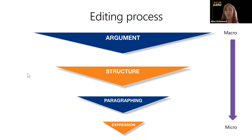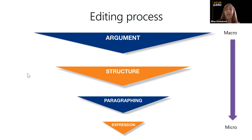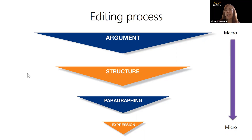It's always about how the micro leads back up to the macro. How does paragraphing and expression best support your structure, which supports your overall argument? You always think about that relationship, but you must start with the macro first. The expression part — even though it's last and in many ways least important in terms of mark weight — actually has the most you can do with it. There's a lot to think about at that stage, but only once your argument, structure, and paragraphing are clearly set.